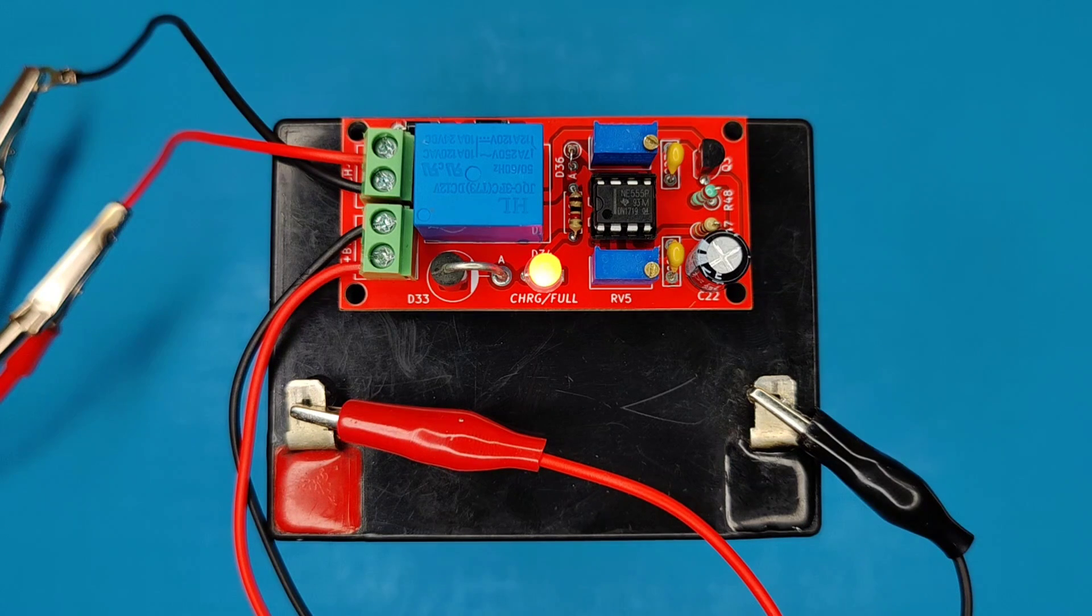Here I changed trigger to 13.2 volts and threshold is same at 13.8 volts. You can see it trickle charges the battery to maintain the cutoff voltage.